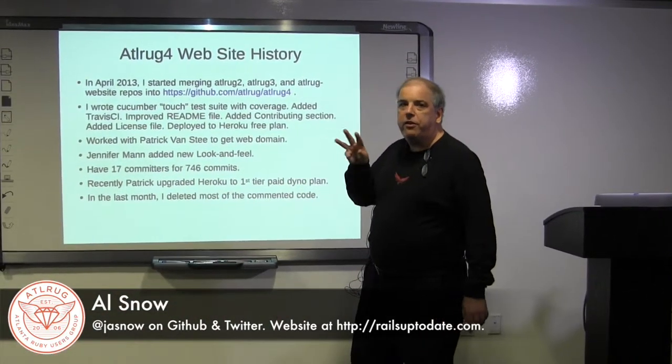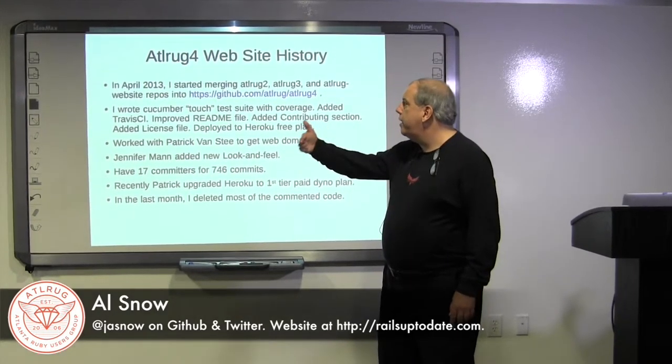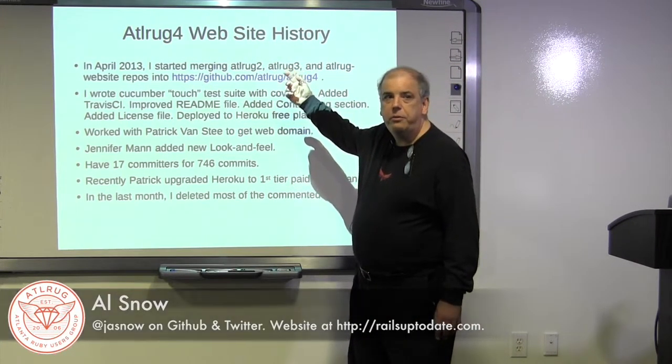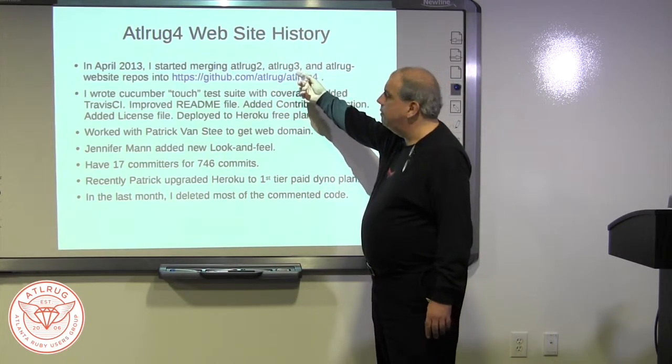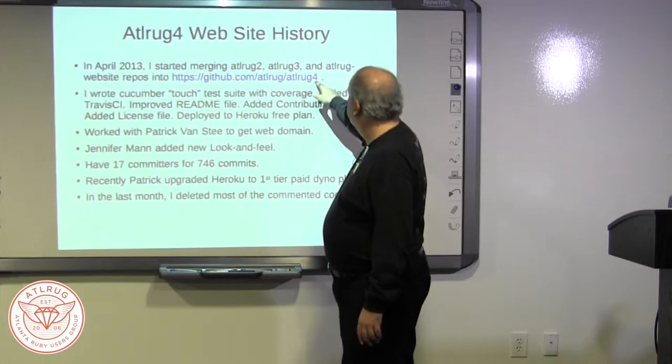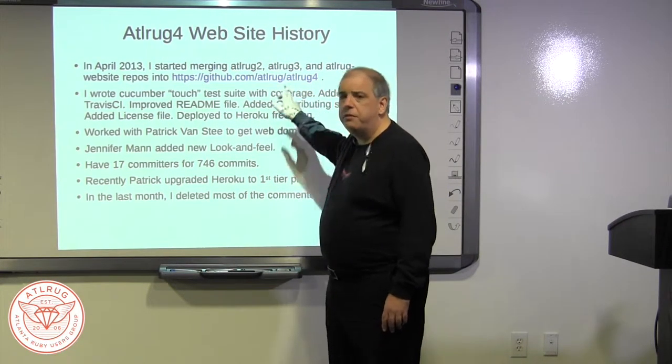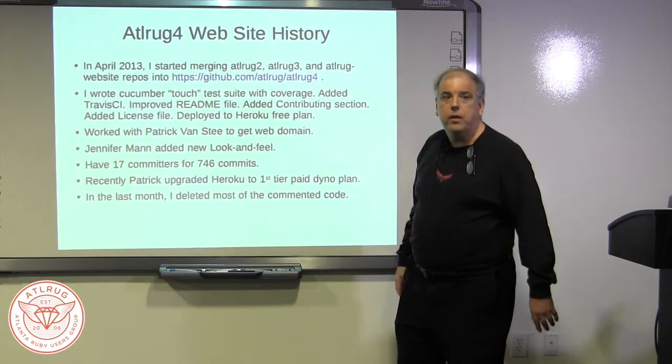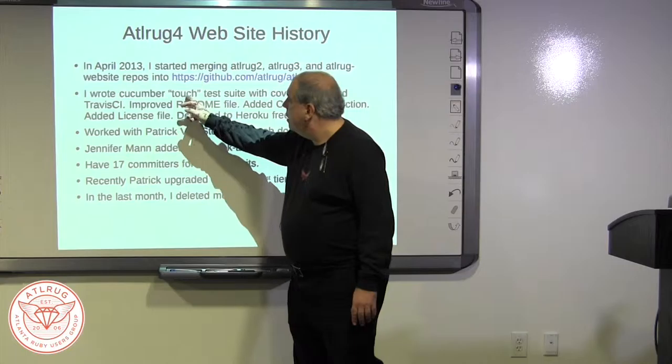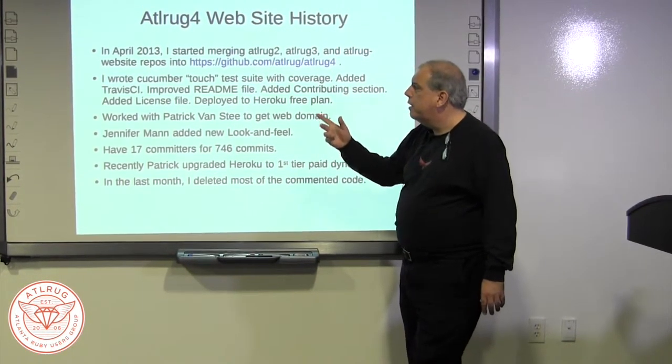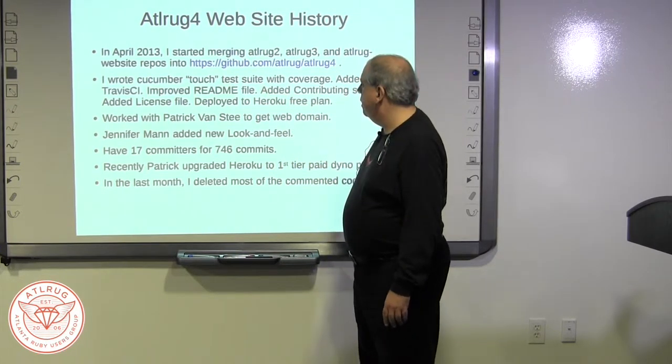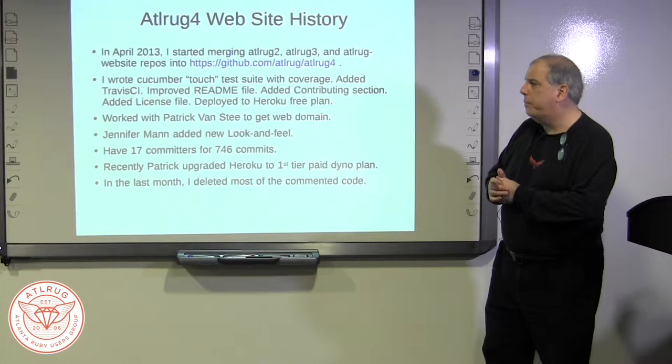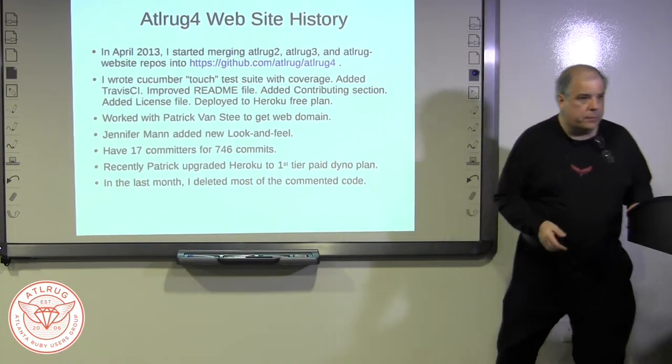About three years ago I took three versions of our website because just about everybody that had been our leader had created a new generation. So we had a version for Rails 2, 3, 3.1, and then 3.2. I merged those together and created Atlrug4. It's on our account, not in my account. So I added touch to suite with cucumber, added coverage, Travis, README, license, and deployed it to a free plan on Heroku.